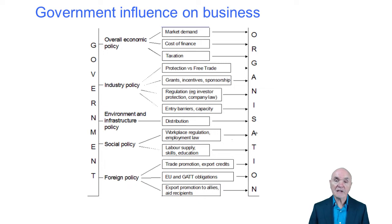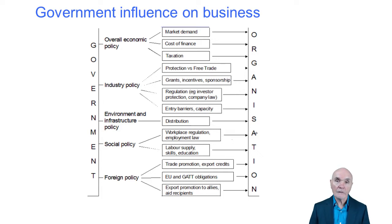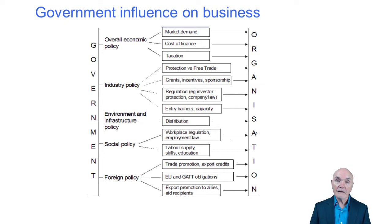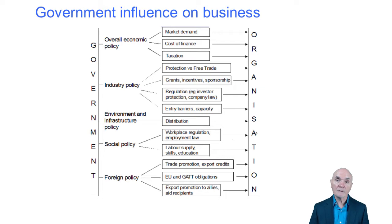Industry policy: protection versus free trade. Protection is where the government puts tariffs on imports. For example, if the government puts 100% tax on all imported cars, they are protecting the home car industry. Free trade is the reverse — you can import and export to your heart's content and the government will not seek to control that.